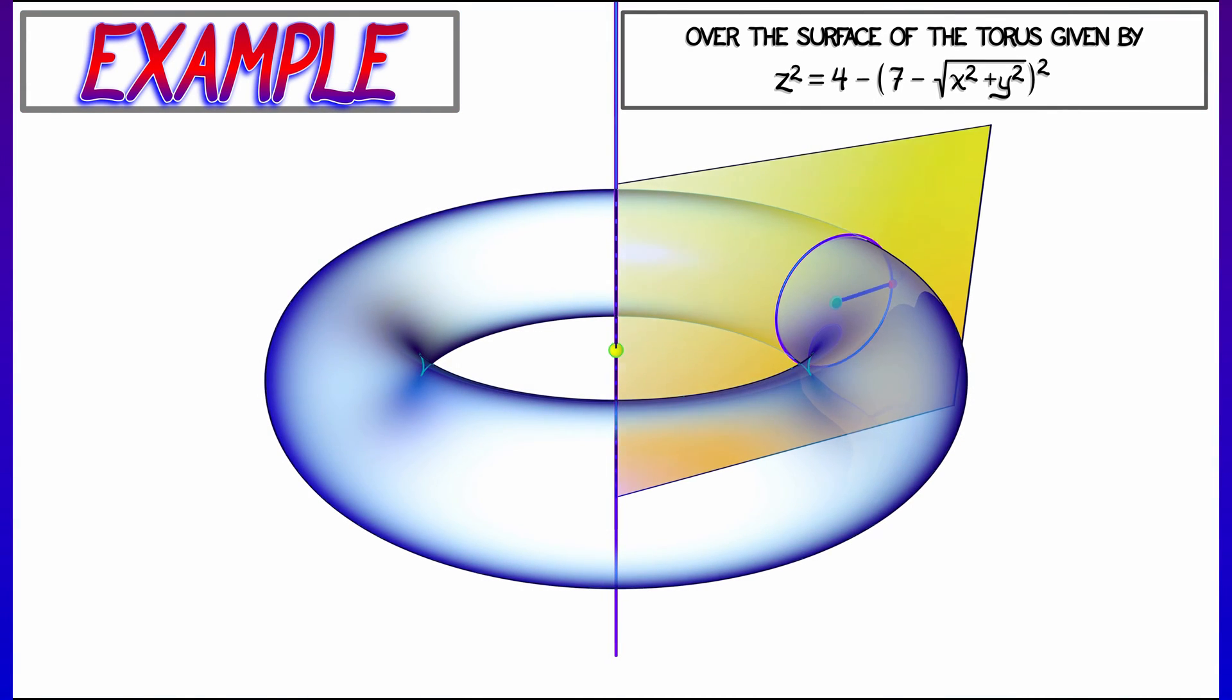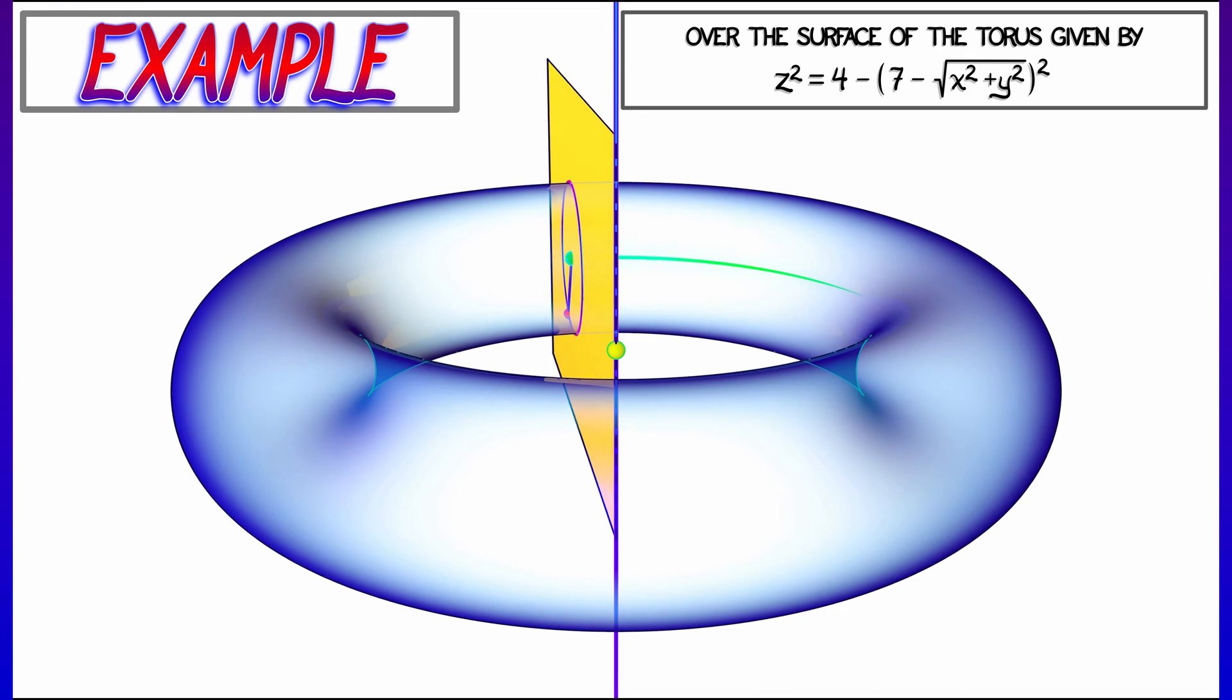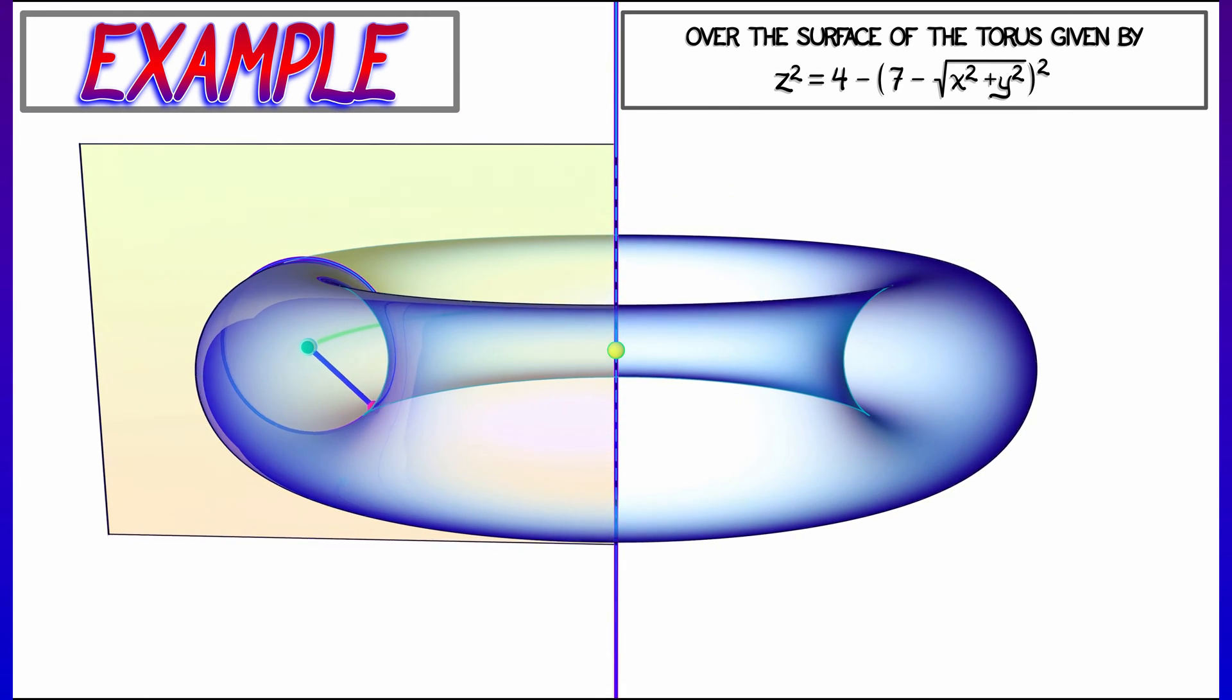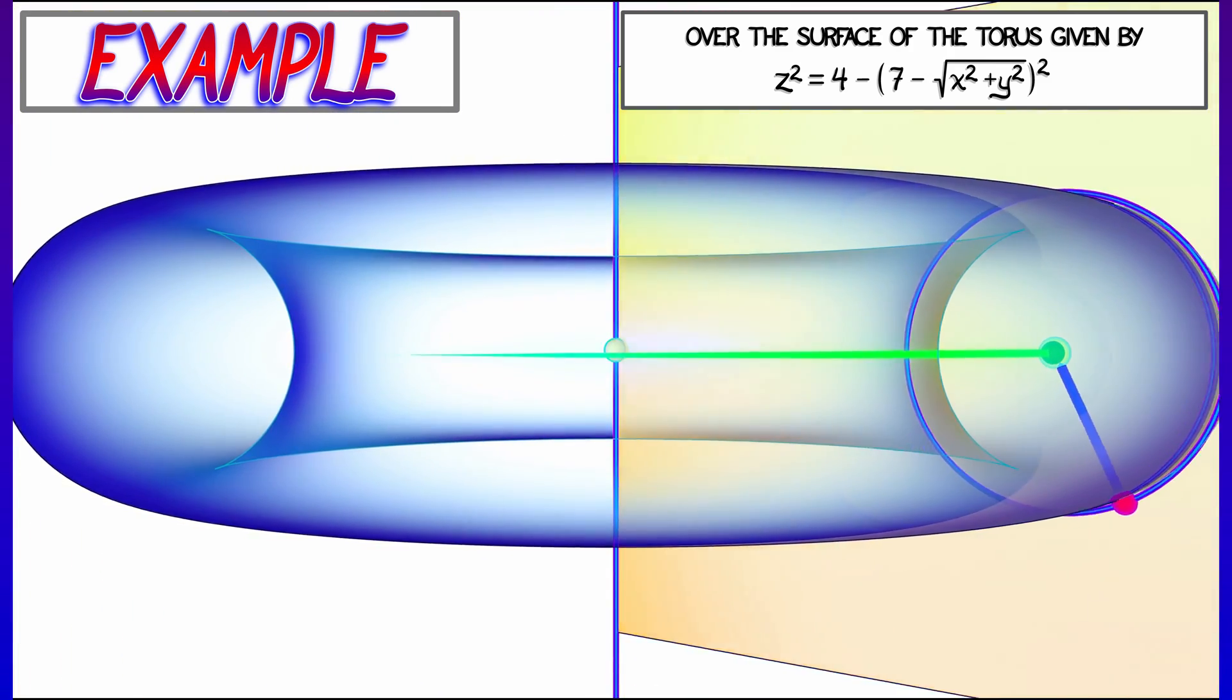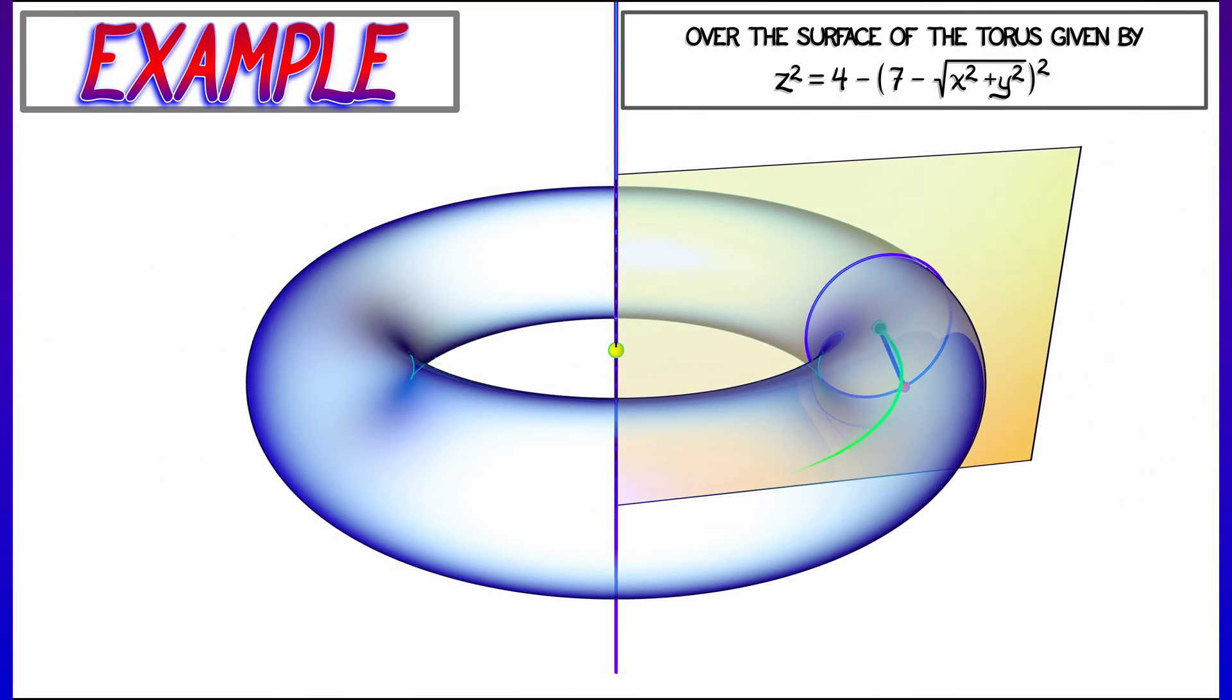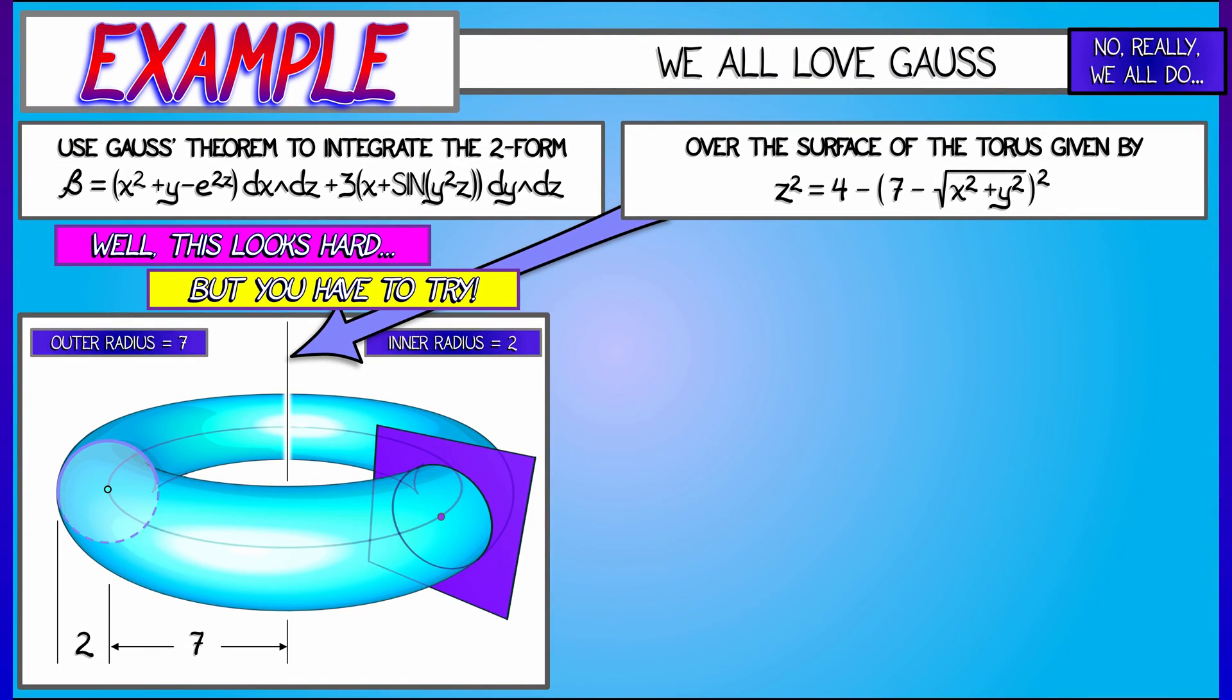I called it a torus because it's a torus. It is something that looks like a doughnut. And if you investigate this equation, you can see cylindrical coordinates kicking in. You can see that radius there and you can see the seven and the four. And if you break down what that means, you get that you have an outer radius of this torus equal to seven. You have an inner radius equal to two.